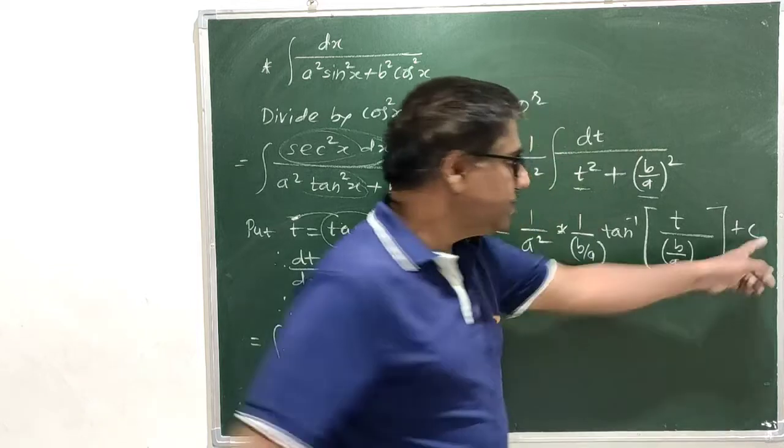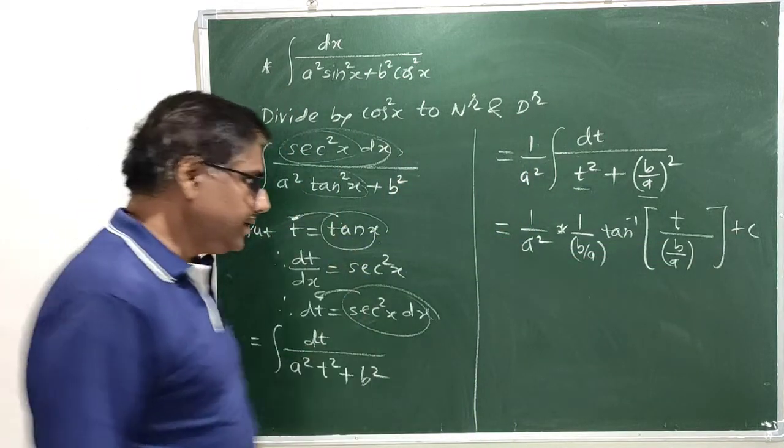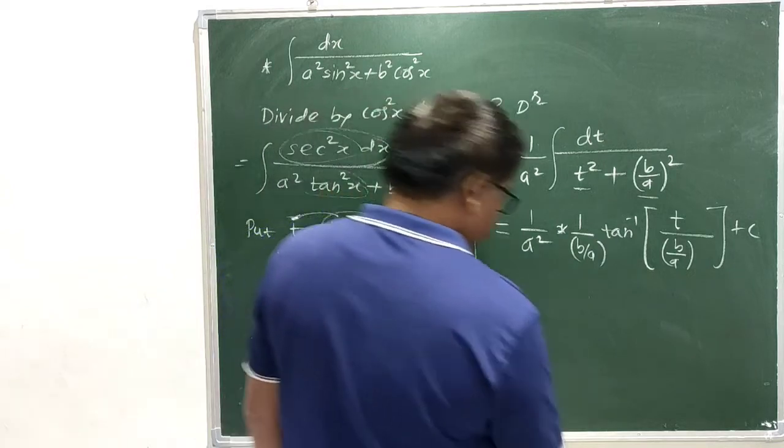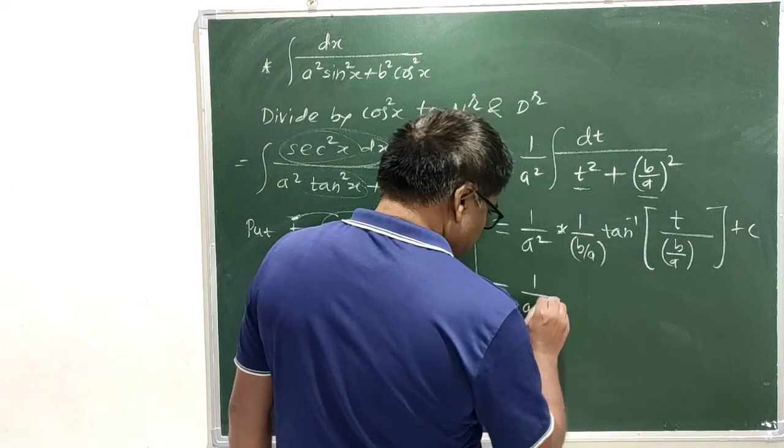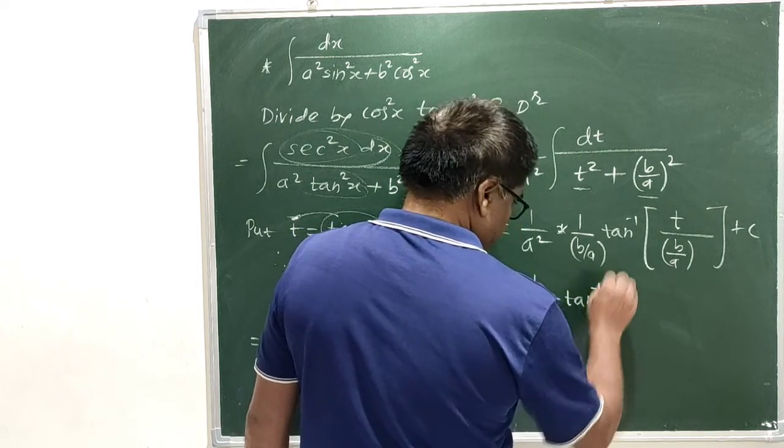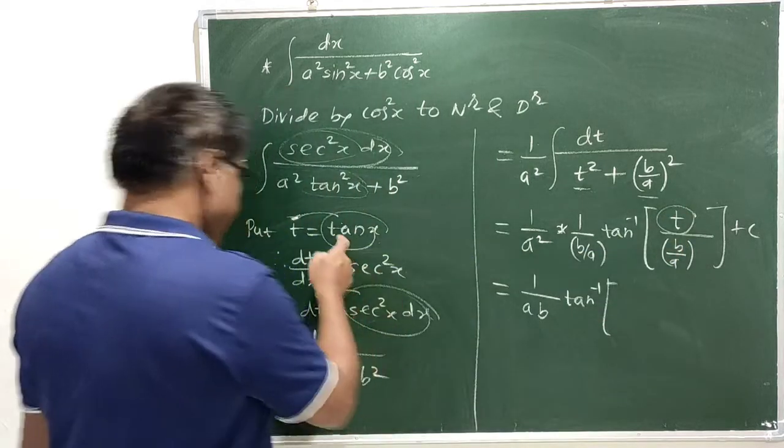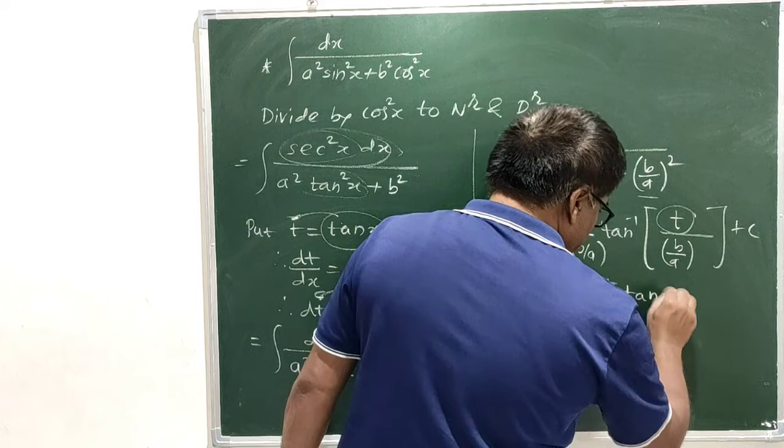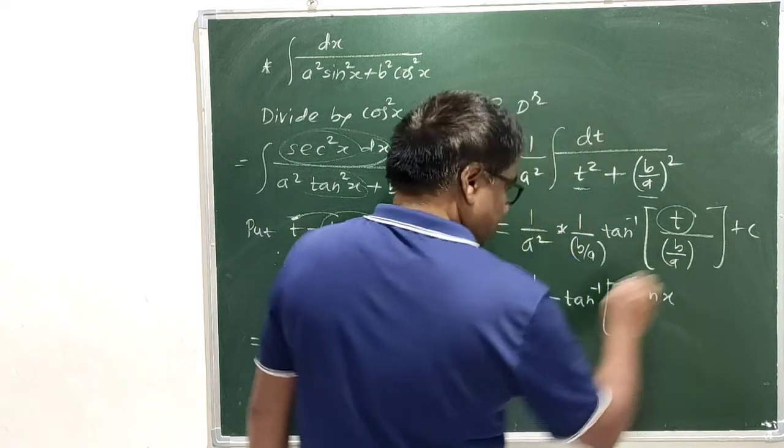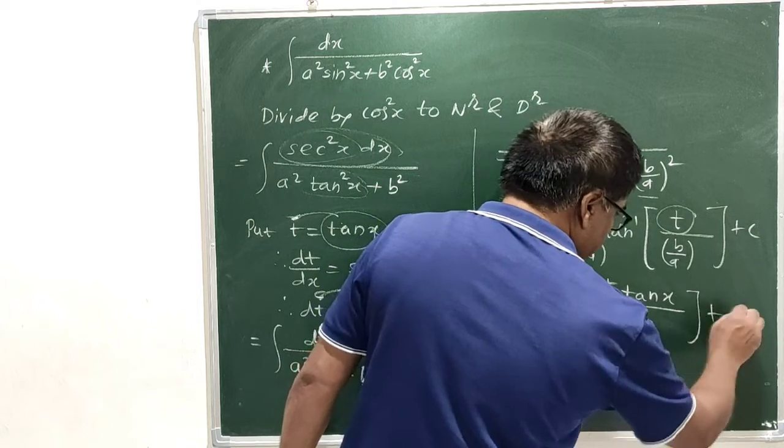Plus, this constant of integration is to be added because this is indefinite integral. Therefore, this is 1 by a into tan inverse of a tan x upon b plus c.